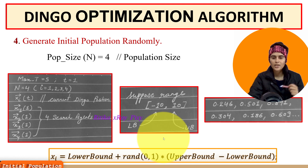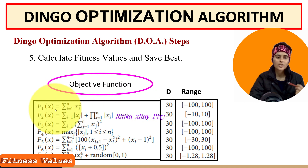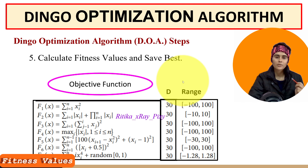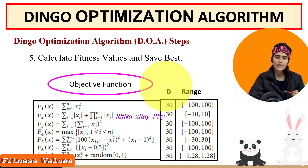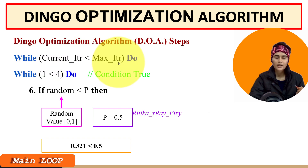Using the objective function we calculate the fitness value for each agent. We can see different test functions with their dimensions and bounds. Once fitness values are calculated, we rank solutions from best to worst and save the best solution in each iteration. Then the main loop starts — we check whether dingoes are doing hunting or not. With current iteration t = 1 and maximum iteration = 4, the condition is true so we move inside the main loop.